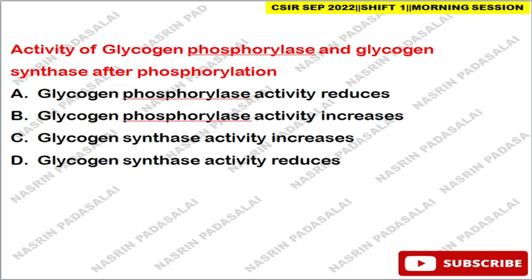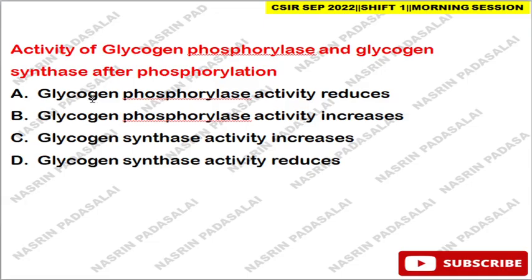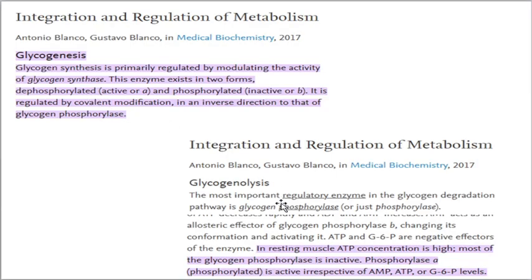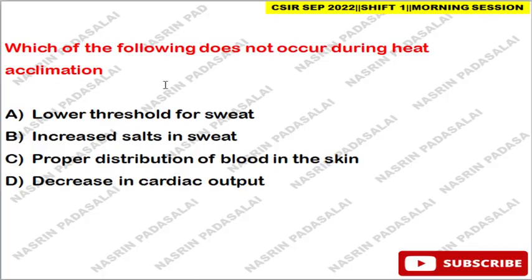The next question is about the activity of glycogen phosphorylase and glycogen synthase. After phosphorylation, glycogen phosphorylase activity increases whereas glycogen synthase activity decreases. Glycogen synthase, involved in glycogenesis, exists in a dephosphorylated active form and a phosphorylated inactive form — so phosphorylation reduces its activity. Glycogen phosphorylase, involved in glycogenolysis or glycogen degradation, undergoes increased activity upon phosphorylation.